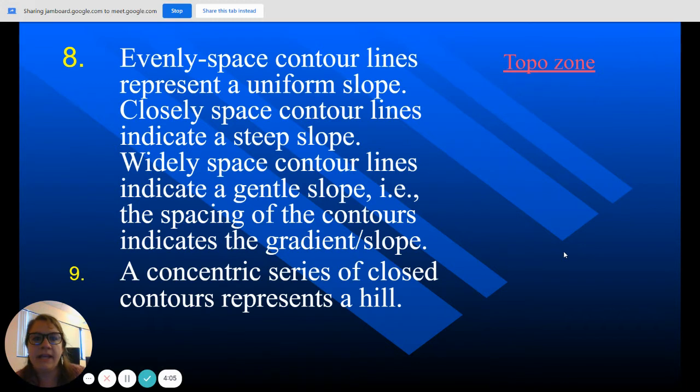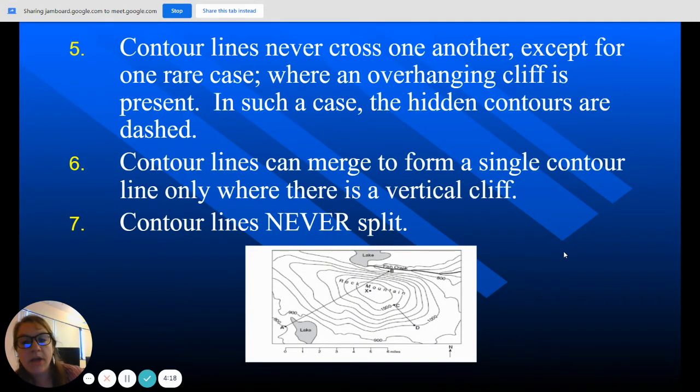Number eight, evenly spaced contour lines represent a uniform slope. Closely spaced contour lines indicate a steep slope and widely spaced contour lines indicate a gentle slope. So the spacing of the contour lines indicates the gradient slope. So looking at this picture, what they're saying is the closer these lines are together, the steeper it is. The farther these lines are away from each other, the more gradual it's going to be.